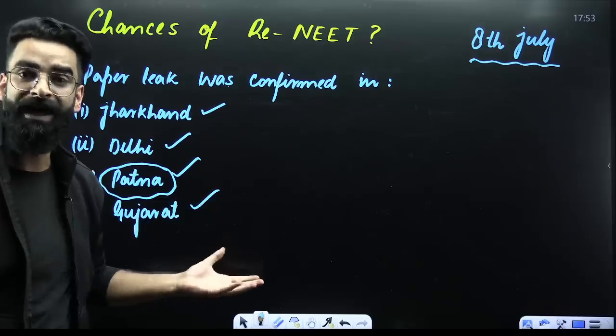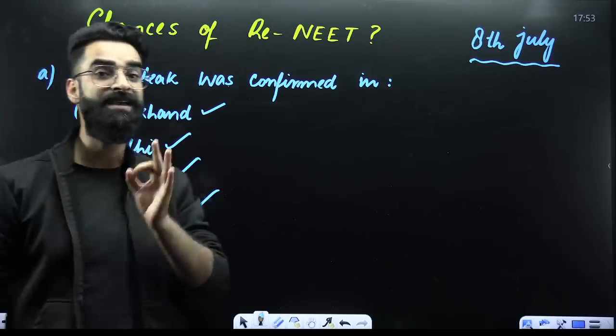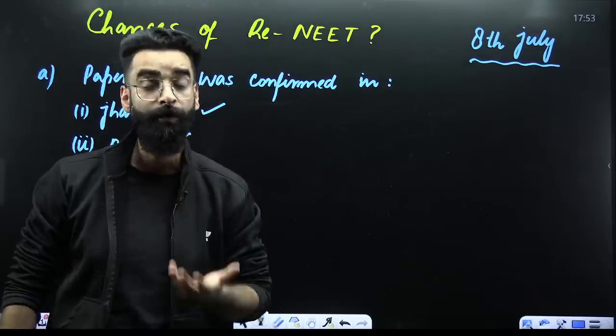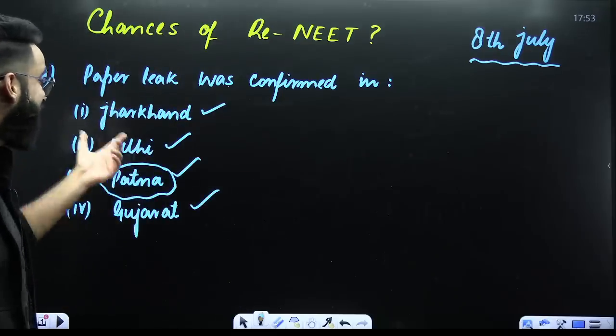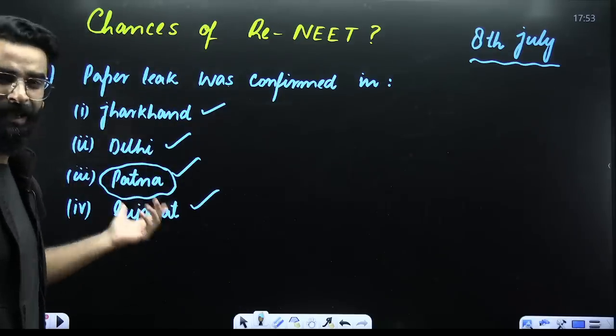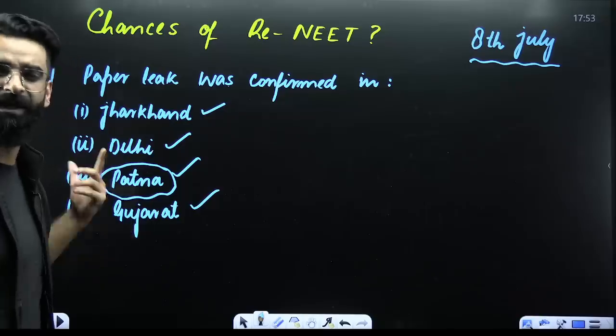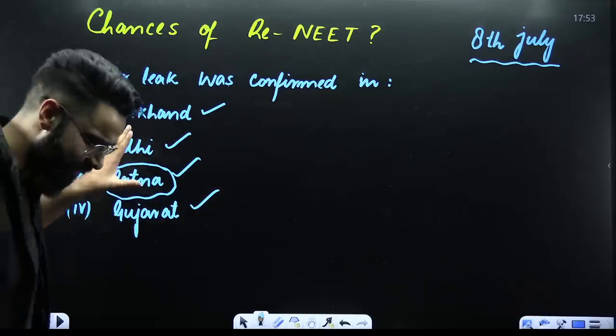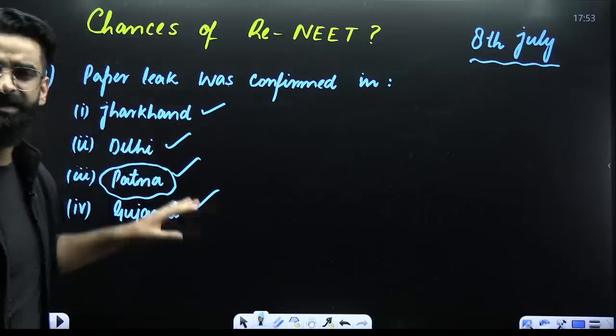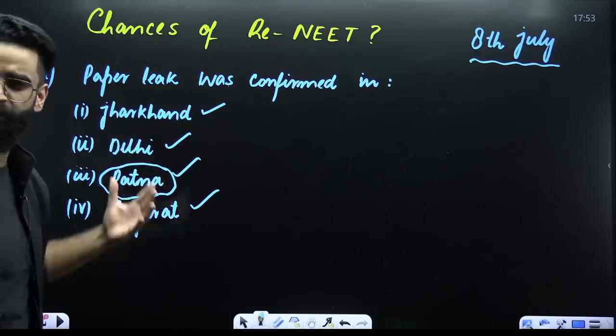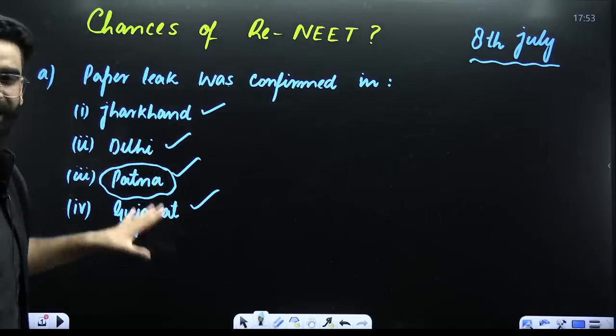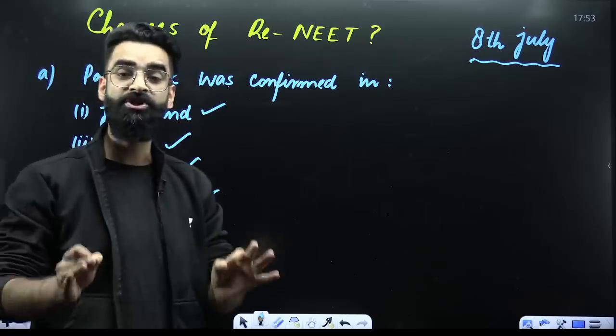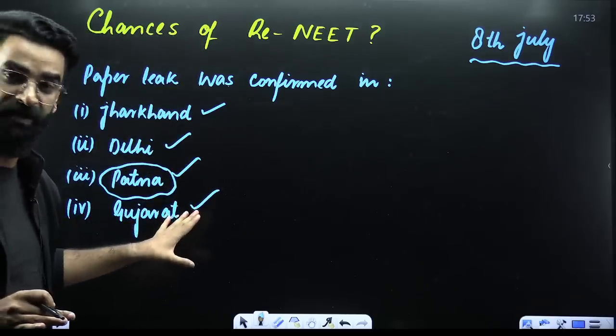How come we got to know about that? Because in all these states, FIRs have been lodged which we did not know till date. FIRs have been lodged in Delhi, Jharkhand. In Gujarat, there were certain hints, but it was not confirmed. But from yesterday's video which came out from the Supreme Court, it was clearly stated that paper leak has happened. Now it's 100% sure that the paper leak has happened in these four states.